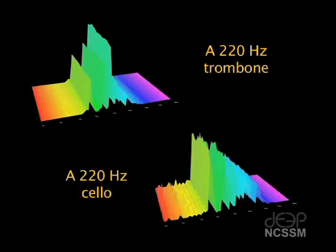Which of the harmonics appear to have lower amplitudes? Note the clear differences between the cello and trombone waves. All of these differences contribute to the unique sound of the two instruments, or their timbre.